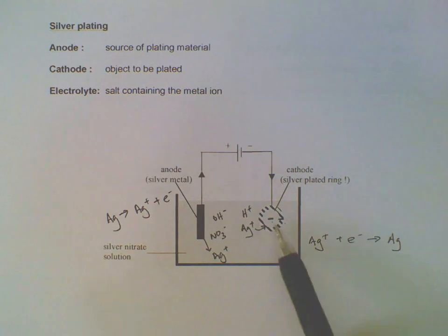So it's important to remember that the object that you want to be plated should be at the negative terminal so that it can attract the positive metal ions.